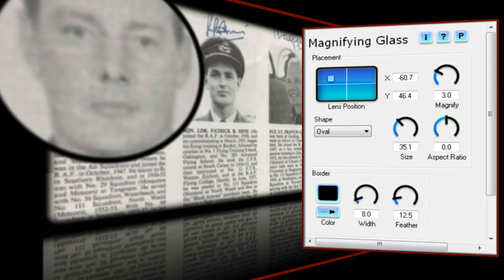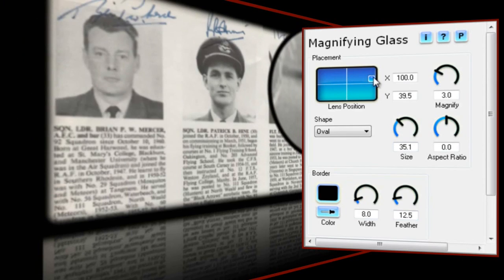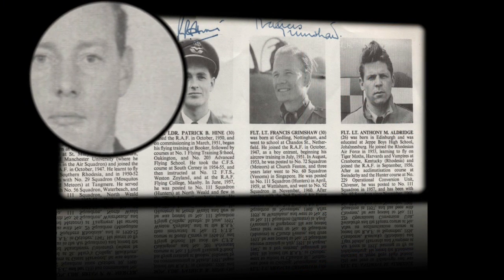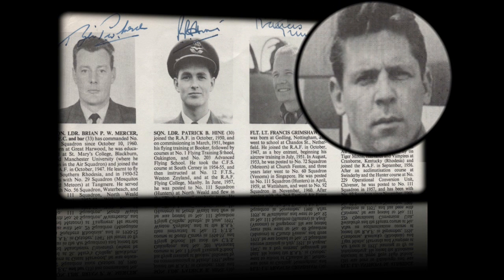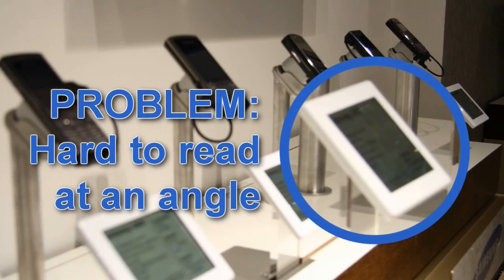So the only thing remaining is for me to keyframe the movement of the lens across the image — and there you have it. Magnifying Glass is a great way to focus the viewer's attention on a specific area of the screen, and in this project the narrator will be saying the names of the pilots as the lens moves across the image. As always, I'll encourage you to play around with the different controls to see what works best for you and your projects. You should get to grips with Magnifying Glass very quickly, as it really is simple to use.